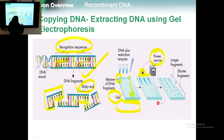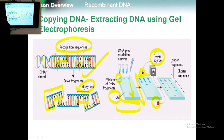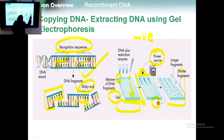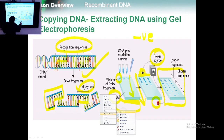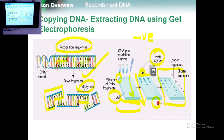Here we apply the negative charge and here the positive charge. The DNA must migrate from negative to positive. Do you know why? Because DNA has a negative charge, so it migrates toward the positive side. This is how we cut DNA and separate it using the technique known as gel electrophoresis.